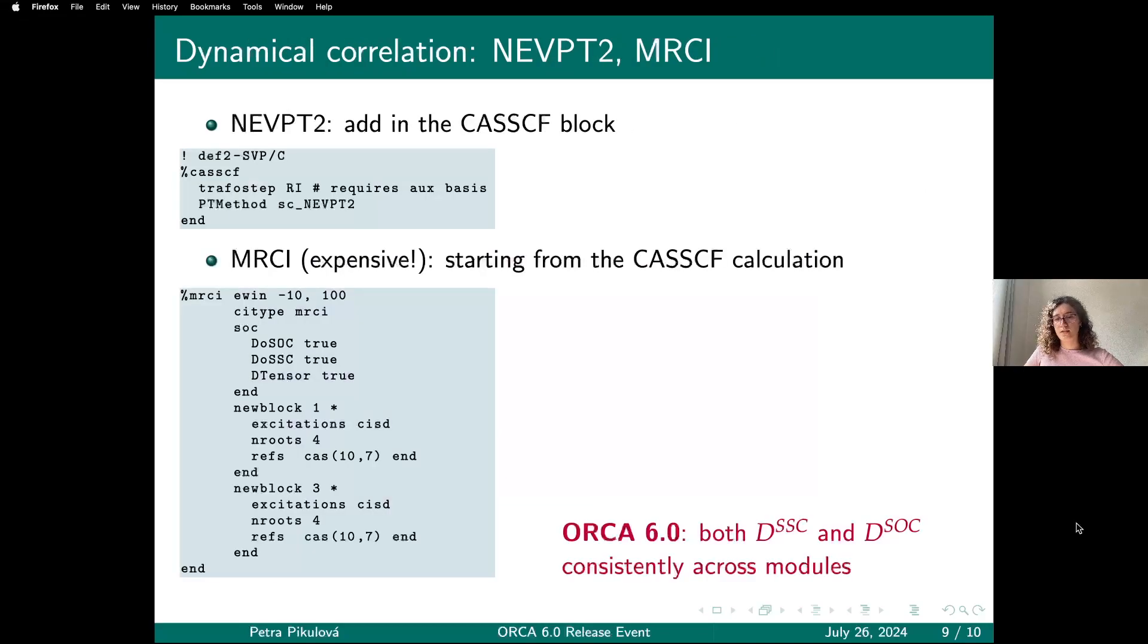If you want to make your QDPT calculation more accurate, you are probably interested in including some dynamical correlation to make it better than your CASSCF calculation. Probably the more straightforward and feasible way is using NEVPT2. In that case, the program will use the NEVPT2 energies for the diagonal of the QDPT matrix.